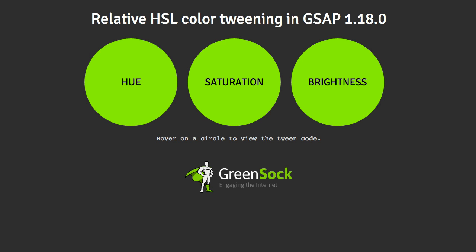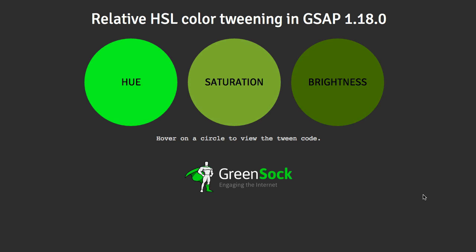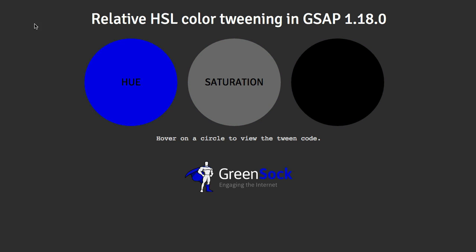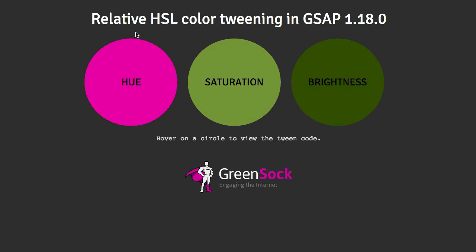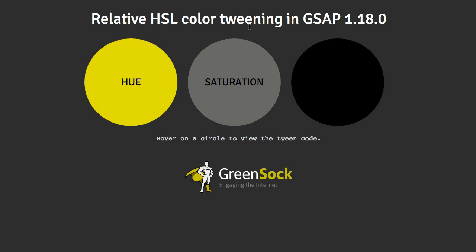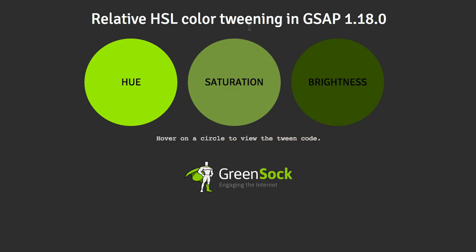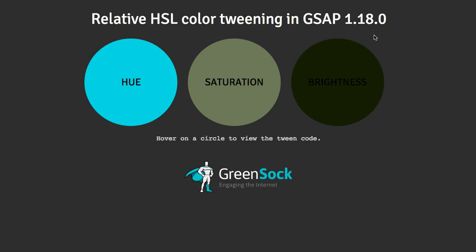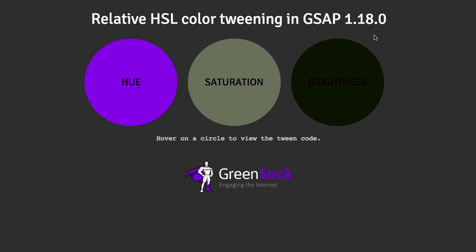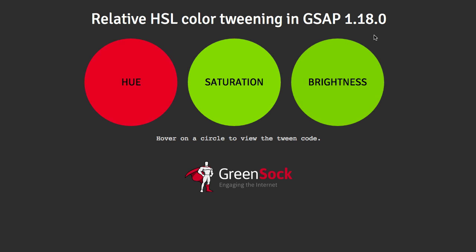What we have here is a little demo that's going to show you how we can now tween the hue, saturation, or brightness of a color independently and relative to an item's normal color. I'm just going to click here to start this demo, and you're going to see that we're running through this color wheel on the hue circle. The saturation circle is going from desaturated to fully saturated — it's a grayscale tween if you will — and on the right, our brightness tween is going from full black to full color.